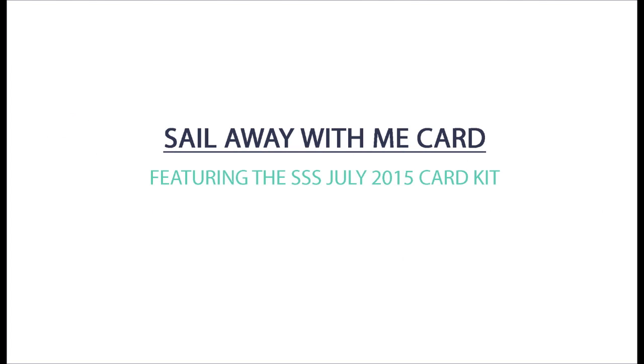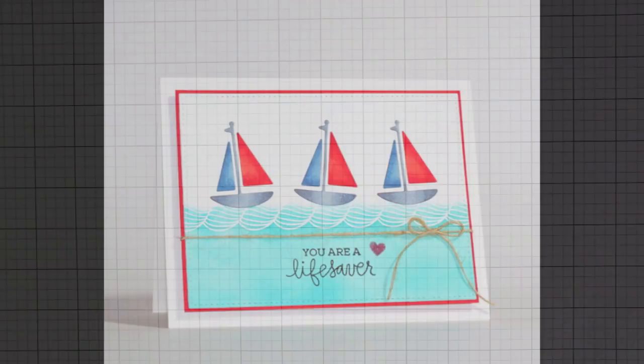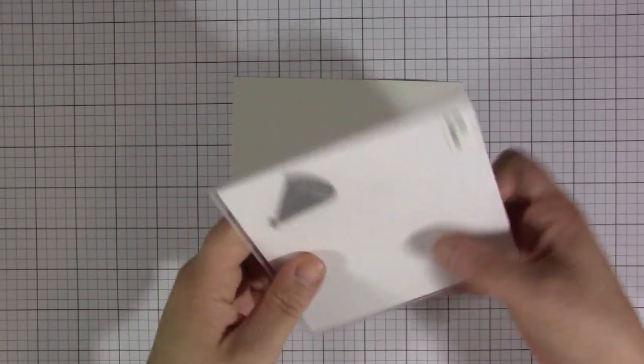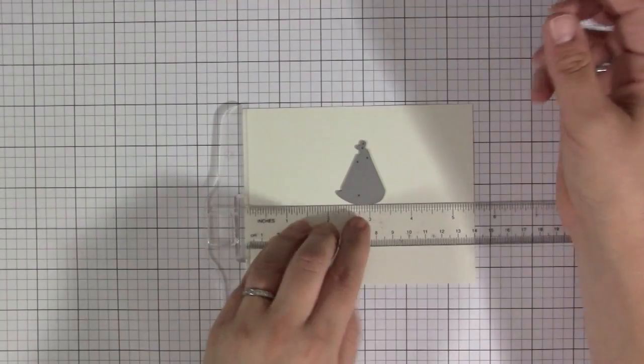Hello, it's Stephanie here, and today I have a video to share a card that I've created with the July Simon Says Stamp Card Kit. This is a really fun nautical-themed kit with a lot of fun water-themed images and really great nautical-themed colors like blues and reds.